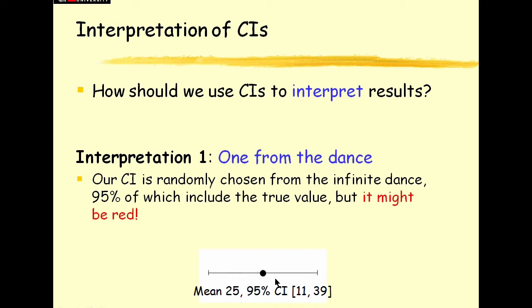So the first interpretation is ours is one from the dance and it might be red. In our lifetime five percent of the confidence intervals we look at will be red. And this one might be, probably won't, but it just might be. We can never tell. Unfortunately in real life confidence intervals don't come coloured.